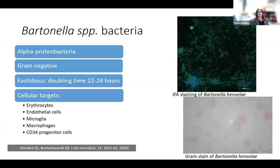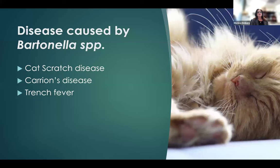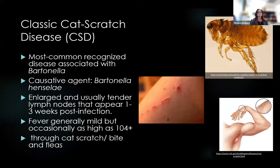Bartonella bacteria are alpha proteobacteria that are gram-negative. They have a fairly long doubling time, and importantly, they can infect erythrocytes or red blood cells and other cell types. The three most well-characterized diseases caused by Bartonella species are cat scratch disease, Carrion's disease, and trench fever.